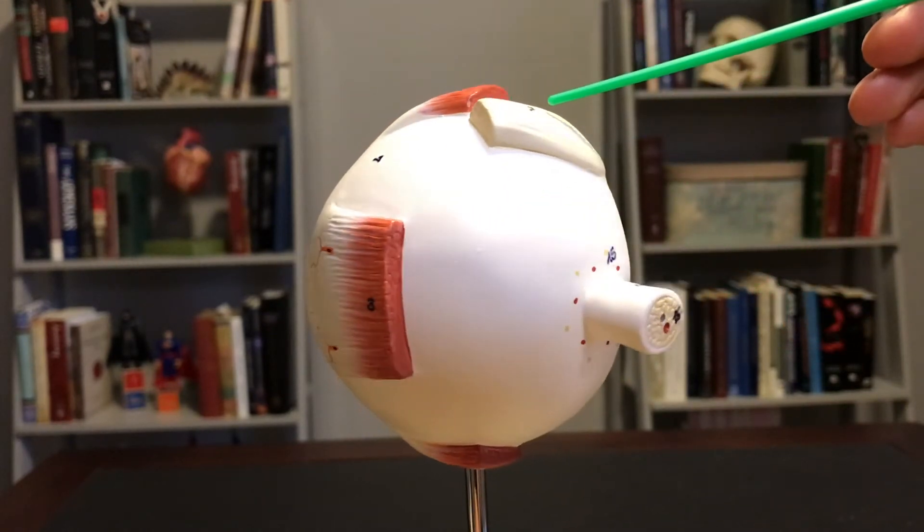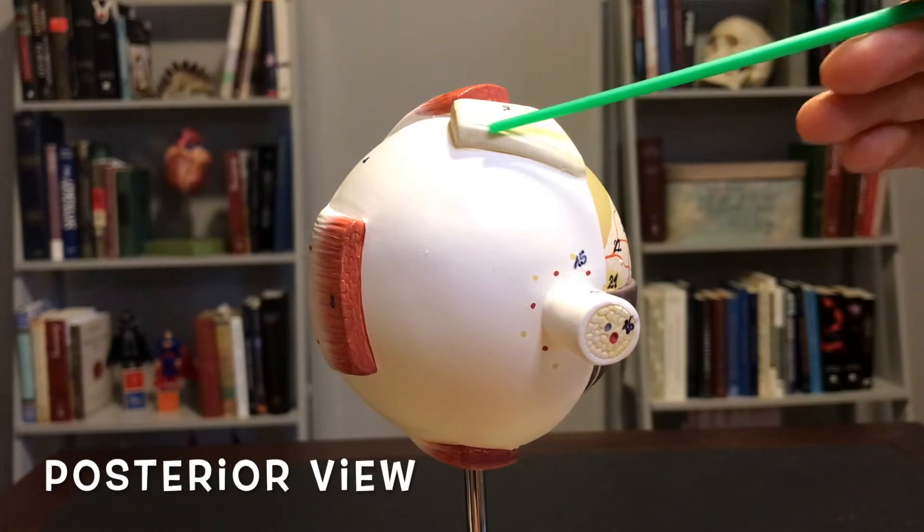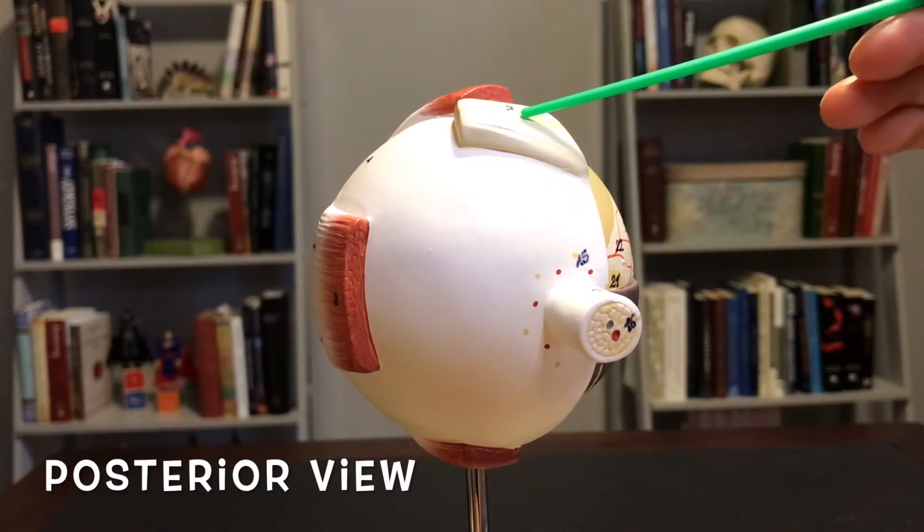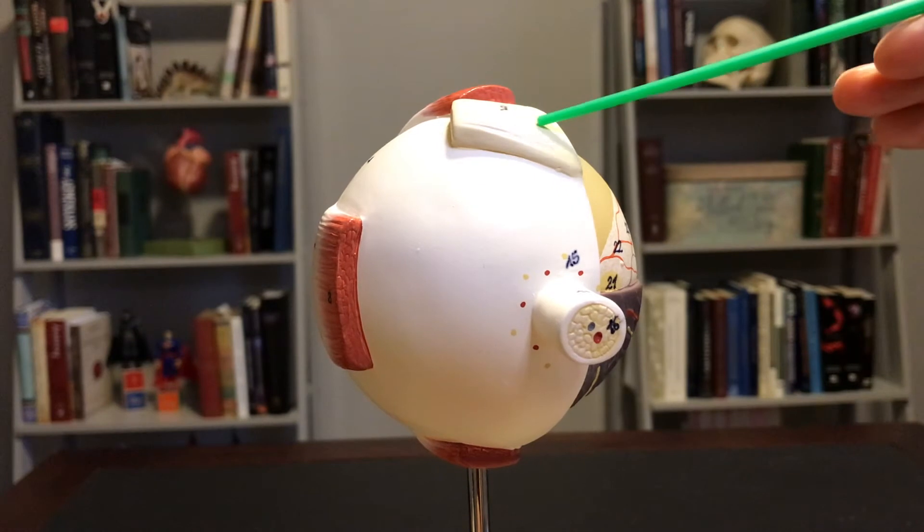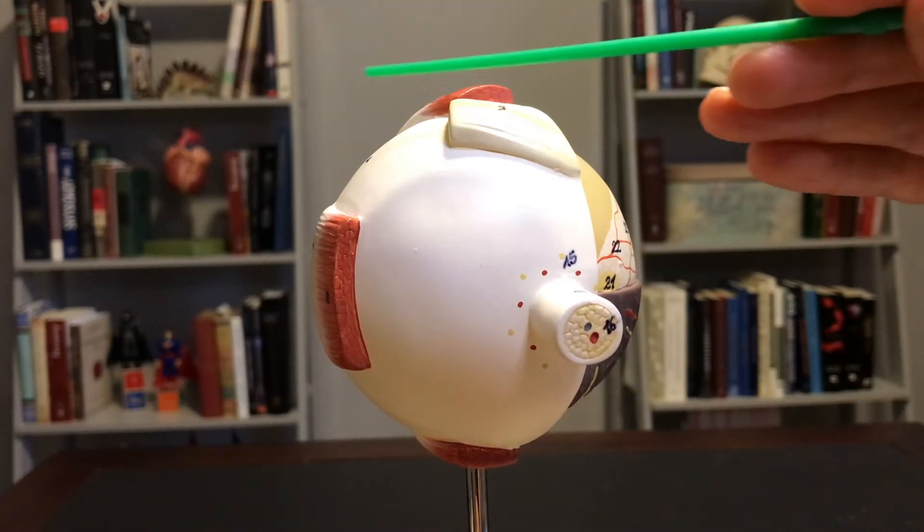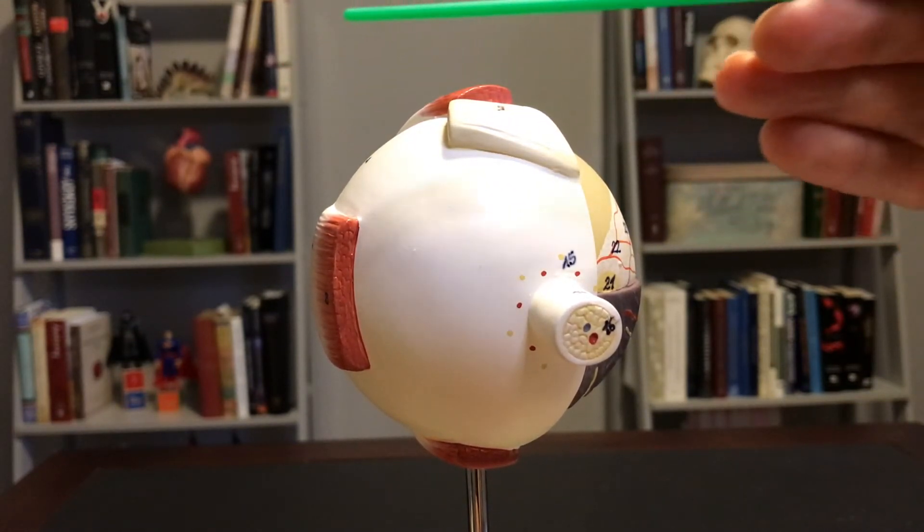In fact, if I show you this structure right here, this would be the tendon of superior oblique. Remember, this grabs on an angle, hence the name oblique. So it's going to come like this, run through that trochlea, and then head back this way.